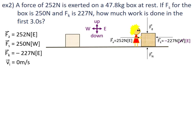Initial velocity is zero because it is starting at rest. The mass of the box is 47.8 kilograms, and the time is 3.0 seconds. Work equals force multiplied by displacement, and we've been given the force — the force applied by the person is 252 newtons.